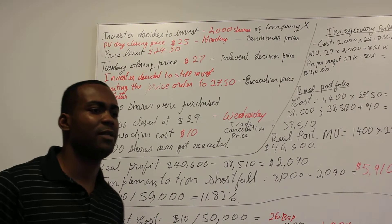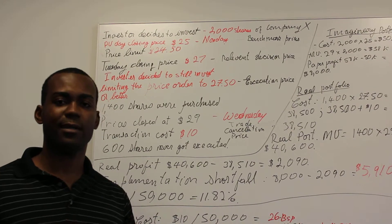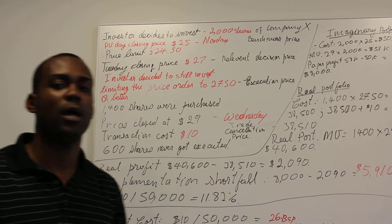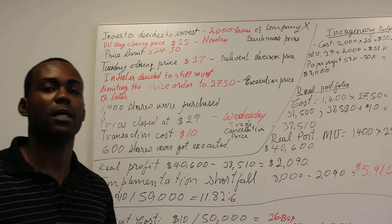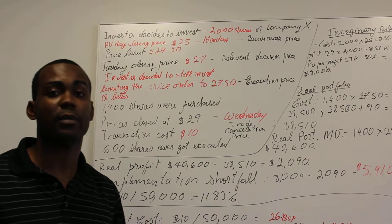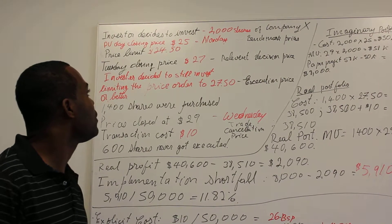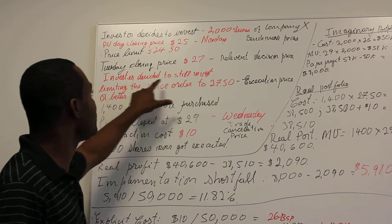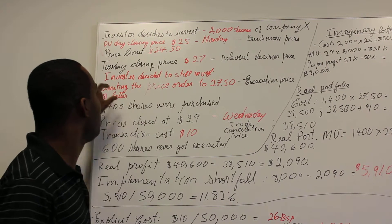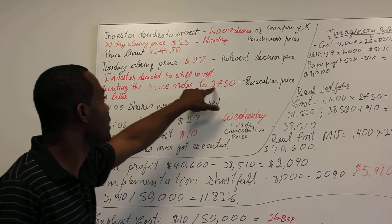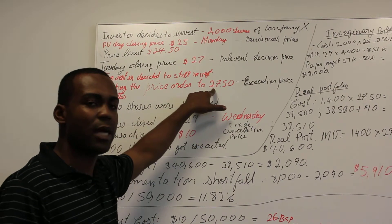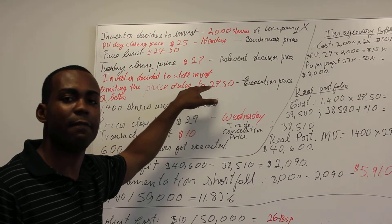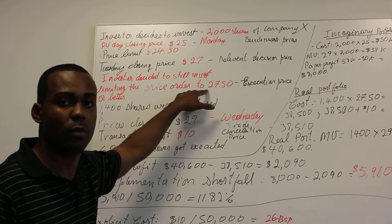The investor still decides that Company X is a good investment and still wants to invest. So he adjusts his order to purchase the shares at $27.50 or better.